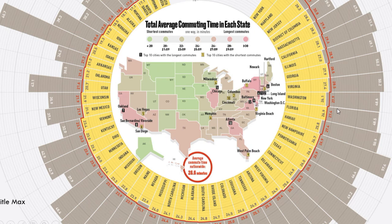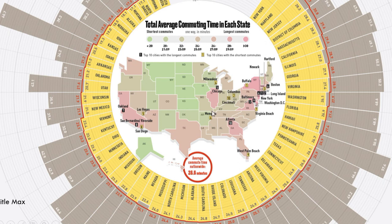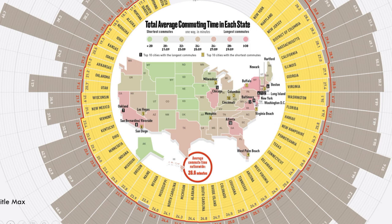This next one is a more lighthearted picture showing average commute time in each state. The lines show minutes — for example, 51.4 minutes — while the red line shows the average commute of 29.4 minutes. The nationwide average commute time is 26.6 minutes, which surprised me — I would have guessed longer. There's also a color-coded map: darker pink means a longer commute, green means a shorter commute. Black squares mark the cities with the longest commutes, and yellow marks cities with the smallest commute times. It's an interesting way to organize a lot of data.